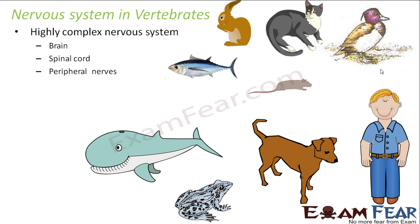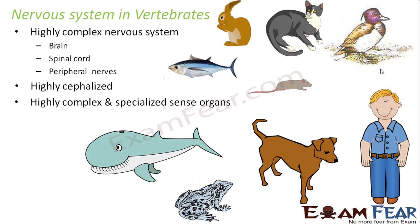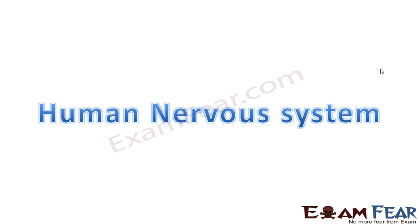Considering human beings as one of the most complex and advanced vertebrates, we will discuss their nervous system in detail — each and every part, how they function and what they do. We will now start with the human nervous system.